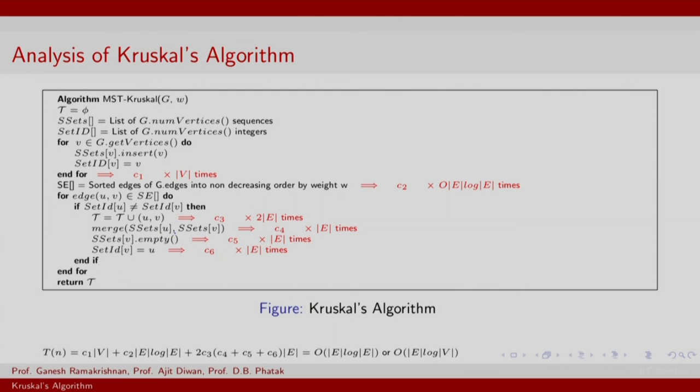The merge is an order E operation again because in the worst case the two sets that you have will need to be merged. And finally, we have some other order E operations over all the edges. One can show that this overall complexity is dominated by this order E log E sorting step. And the worst case E is order V squared. Therefore, order E log E can also be written as order E log V. Thank you.